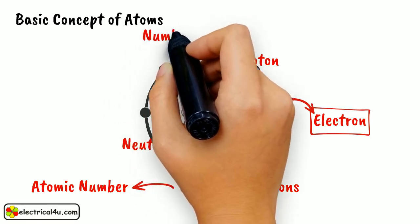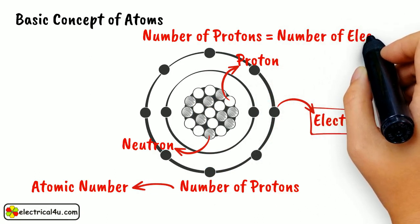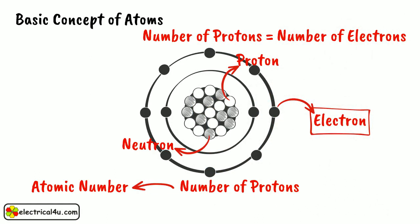In a normal case, the number of protons is equal to the number of electrons in an atom. That means that once you know the atomic number of an element, you also know the number of electrons it has.